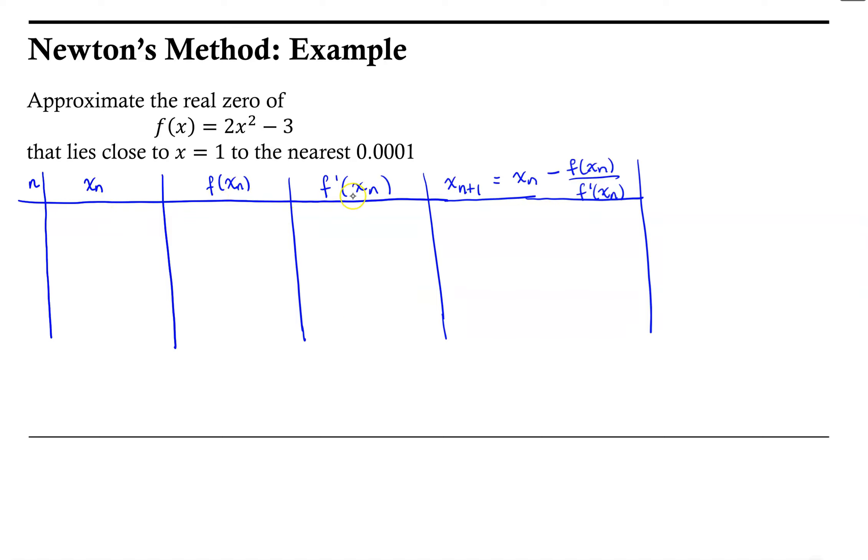With those three pieces of information, we can then approximate the next zero. And with that approximation, we can get the next iteration as we hopefully get closer and closer to the zero of the function.